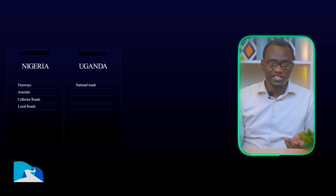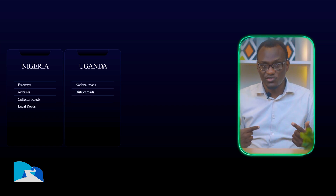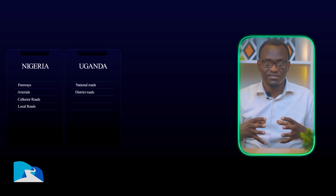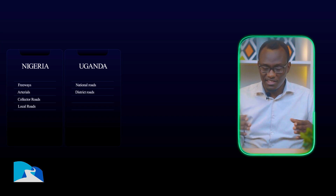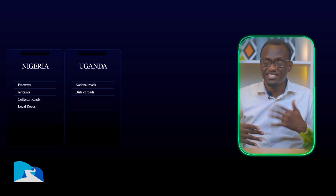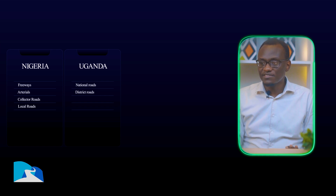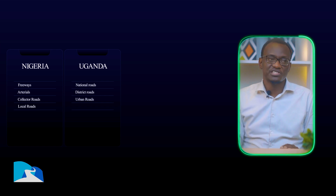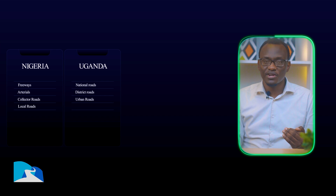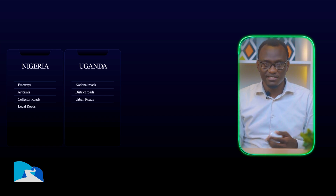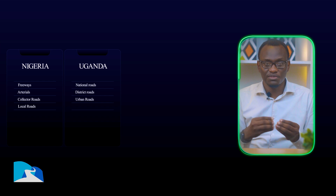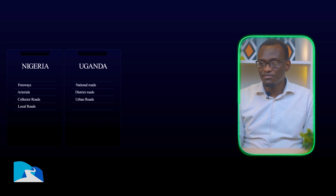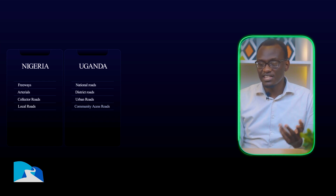Then we have district roads — roads within a district — which are the same as arterials, just described in different wording. After that, we have the urban roads, which are like the collectors because they're collecting people. And finally, we have what we call the community access roads.